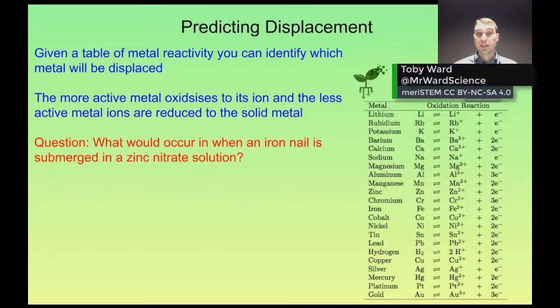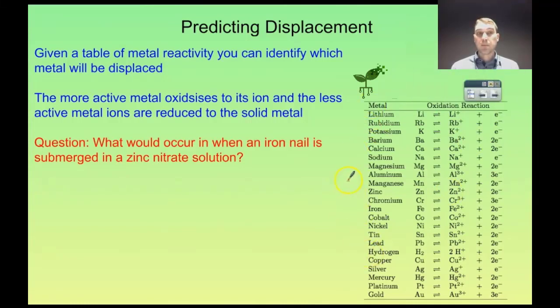You can predict whether a metal will displace the ions of a less active metal by looking at an activity series. Over here we have an activity series that we could look at. The more active metal oxidizes to its ion, the less active metal's ions are reduced to the solid metal.